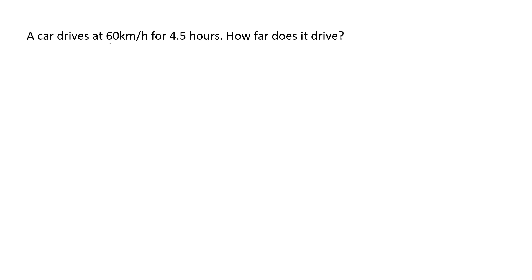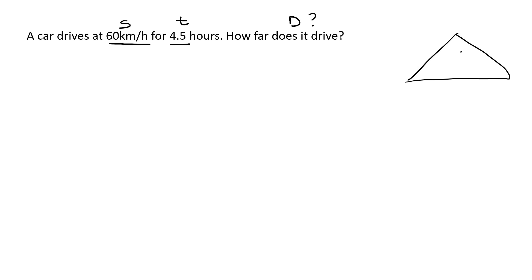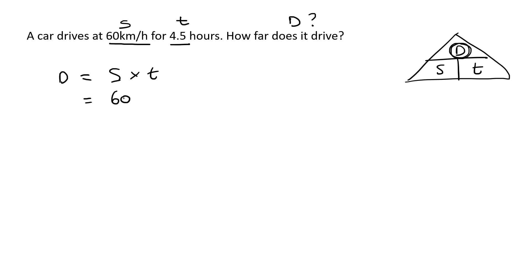Next question. A car drives at 60 kilometers per hour — that's a speed — for 4.5 hours — that's a time. How far does it drive? That's asking for distance. Once you have the triangle it's easy. We're looking for distance, and the other two are at the bottom, so this is the one where you multiply them. That'll be 60 multiplied by 4.5, giving us 270. What units? Look here — kilometers.